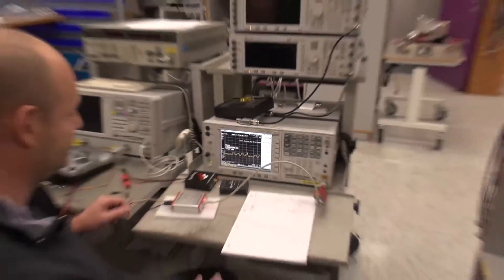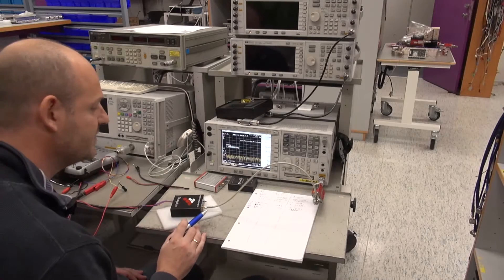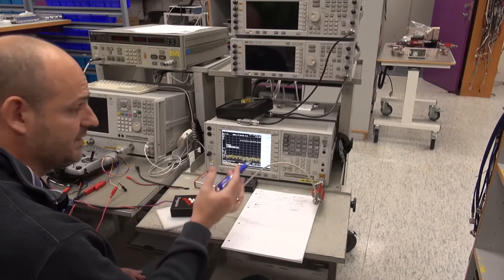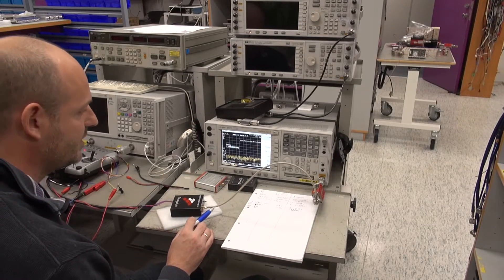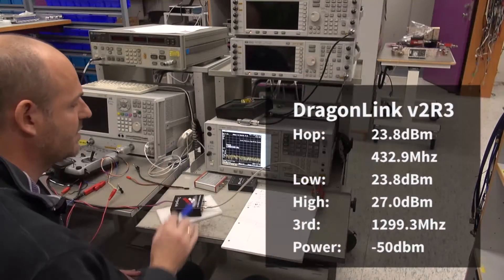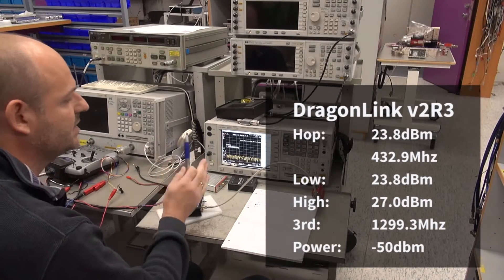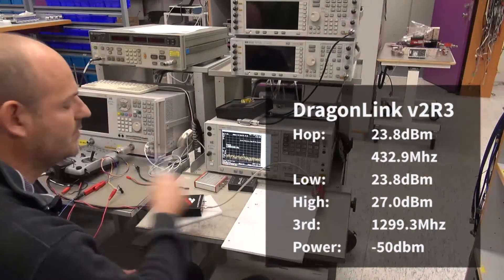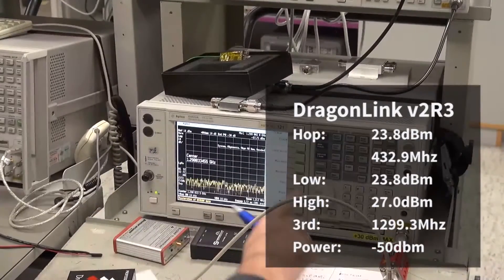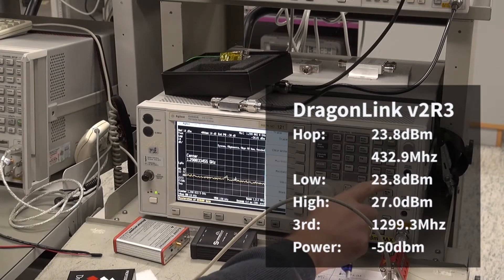We're still doing the harmonics test of the three different UHF systems. This one is the Dragon Link. Now I'm powering up the system. After a few seconds this system will boot up and start to frequency hop. As I'm looking at the third harmonic, you'll see a tiny little spike every now and then when it hits the zoomed in frequency. I will use max hold and then we will see the peak.